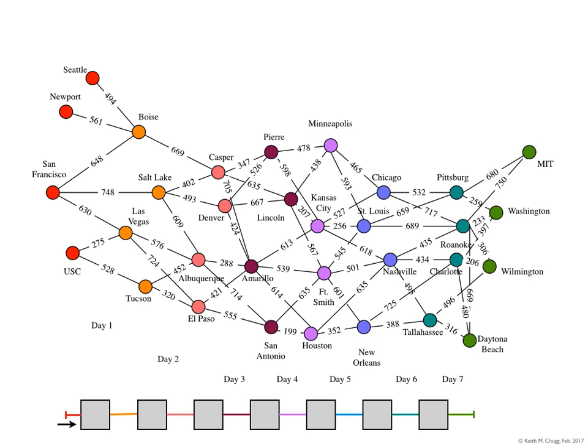One way you could solve this problem of finding the shortest path is just to make a long list of all the possible routes you could take, and take the sum of their one-day mileage to get the total mileage for each route. There are a lot of these paths — for example, if you consider just that you're in Salt Lake, there are three ways to leave Salt Lake: Casper, Denver, and Albuquerque. There are three ways to leave Casper, three ways to leave Denver, and two ways to leave Albuquerque. So after just two days of traveling leaving Salt Lake, you're up to three plus three plus two, or eight different routes. And then considering extensions from Pierre, Lincoln, Amarillo, etc., the number of possibilities keeps growing very rapidly, so it's really not practical to write down a list of all possible routes.